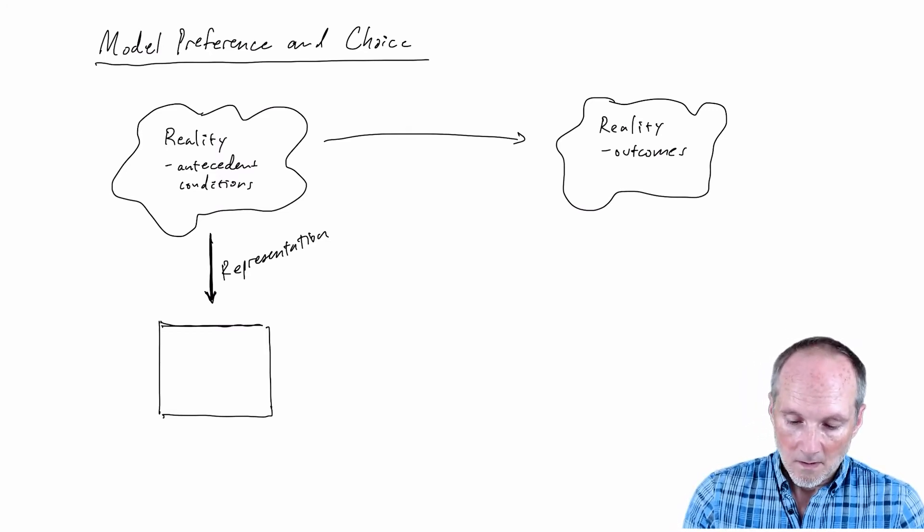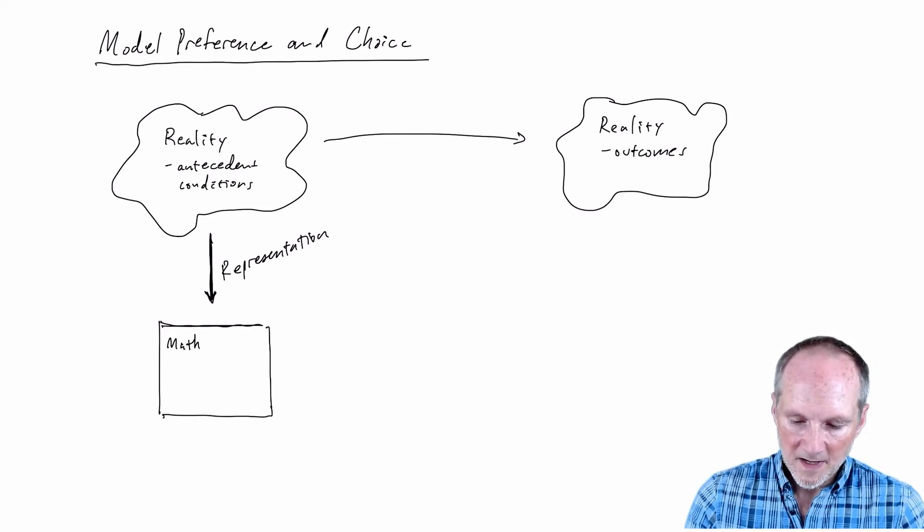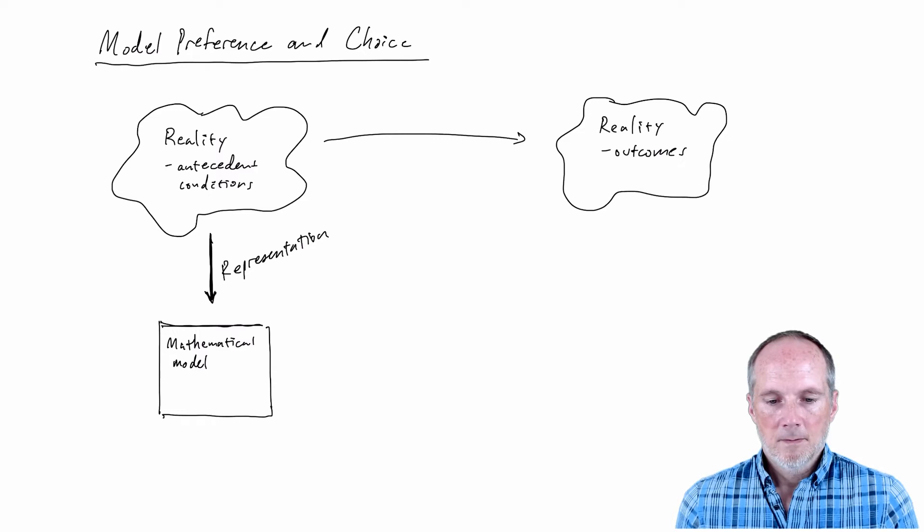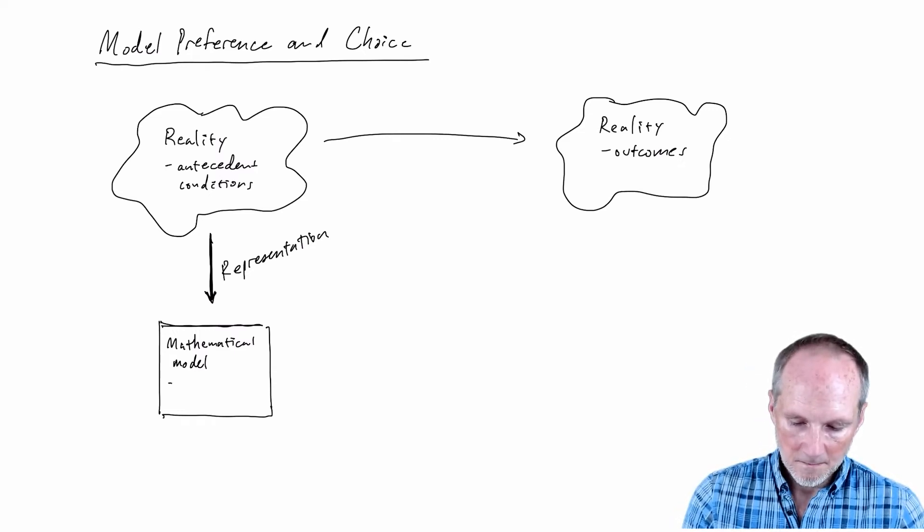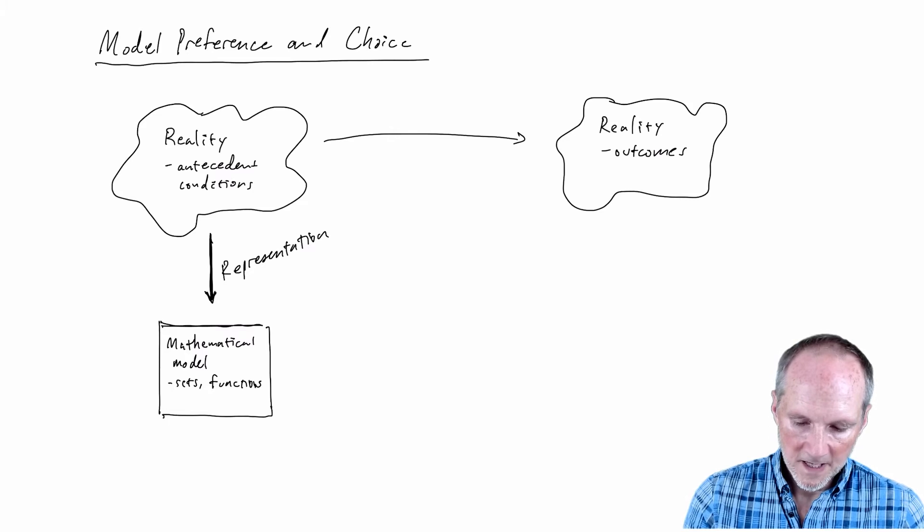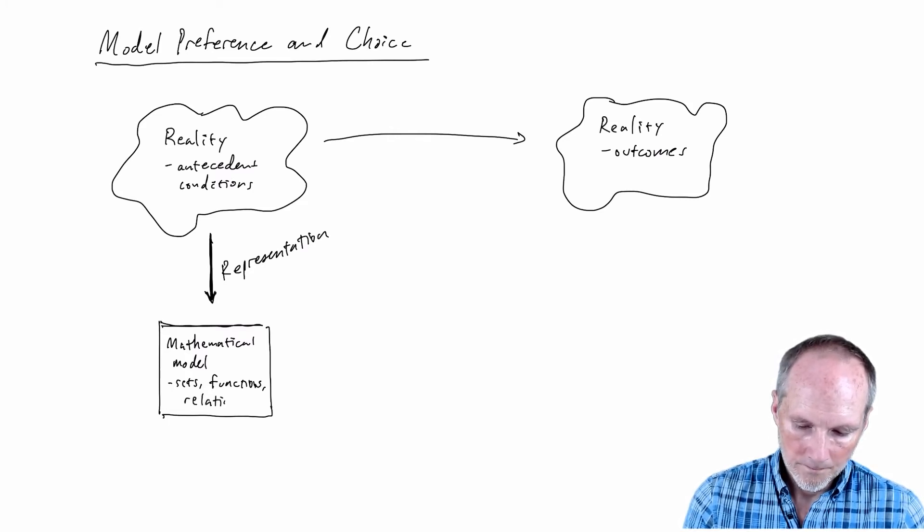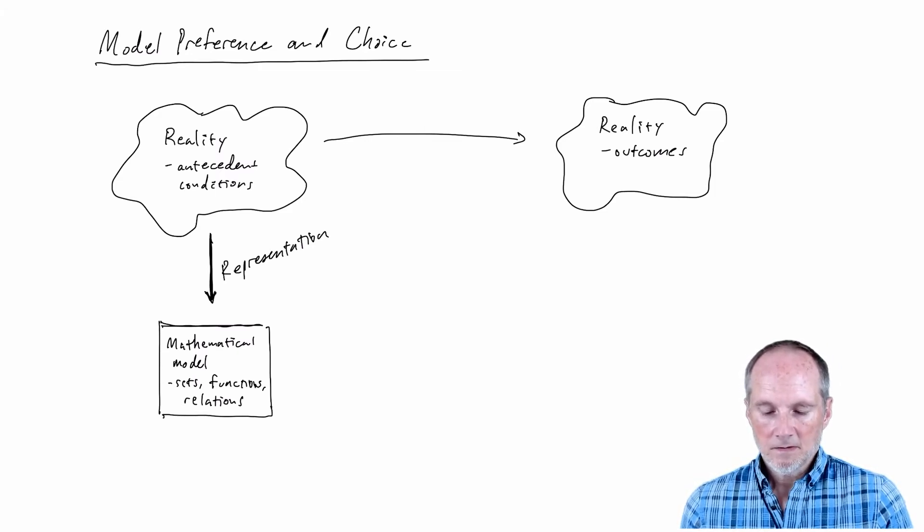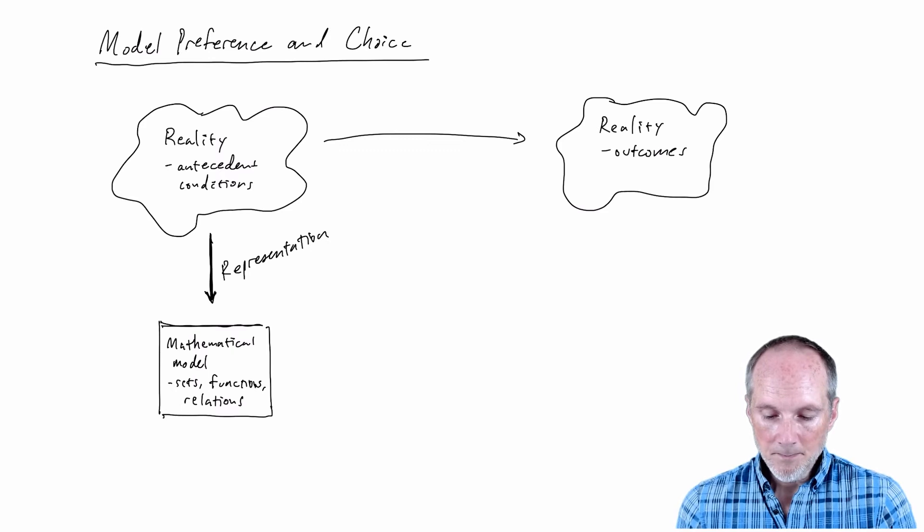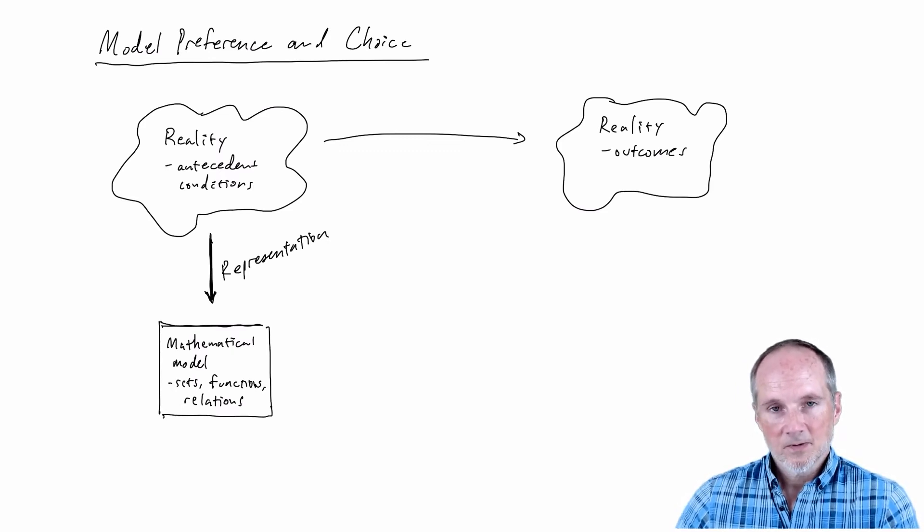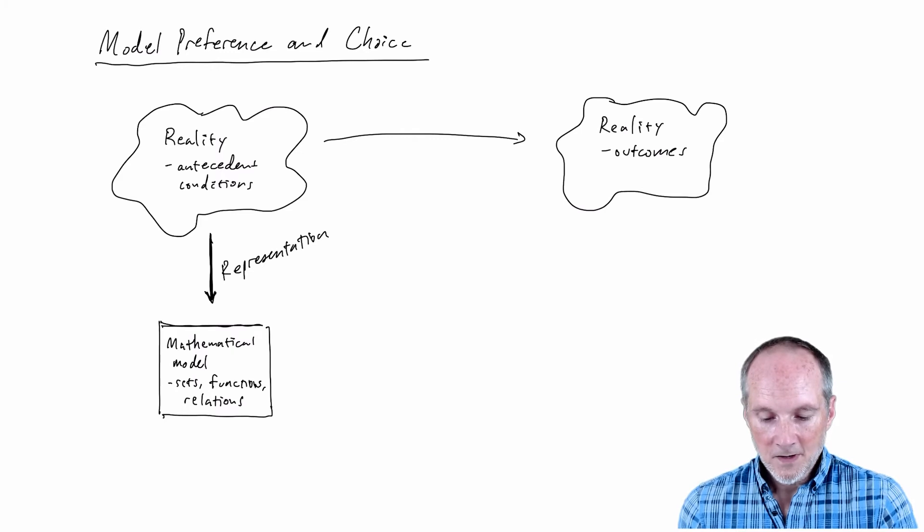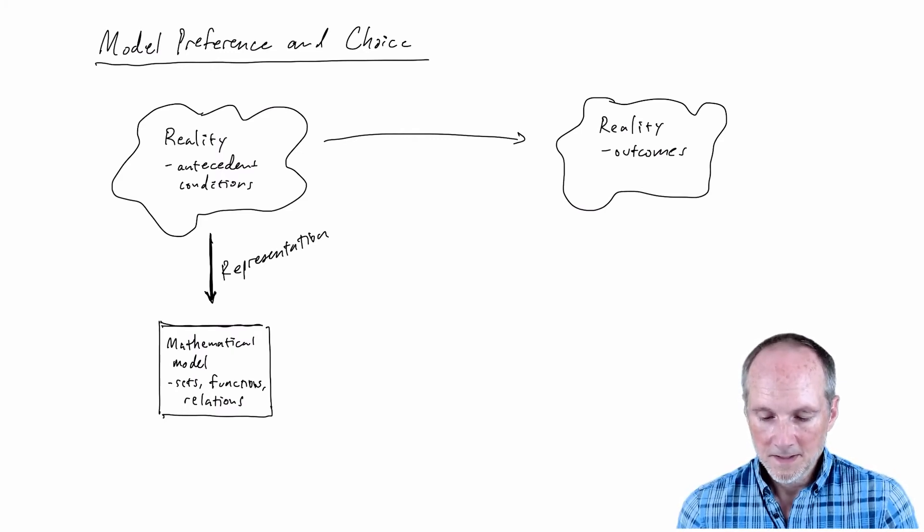At any rate we're going to represent reality by some mathematical model and this model will be made up of mathematical parts like sets and functions and relations. This model should capture the essential features of reality of whatever it is you're trying to understand. But there's some abstraction here because we're in the process of simplifying we're leaving out some detail and it's not always that straightforward to figure out how do we capture those essential aspects.